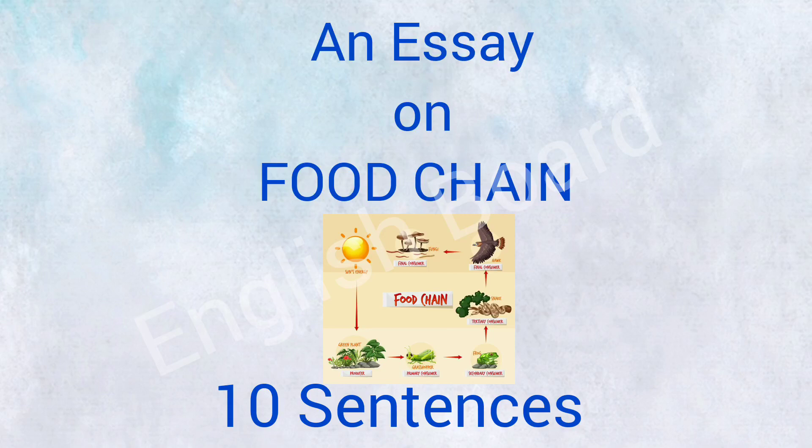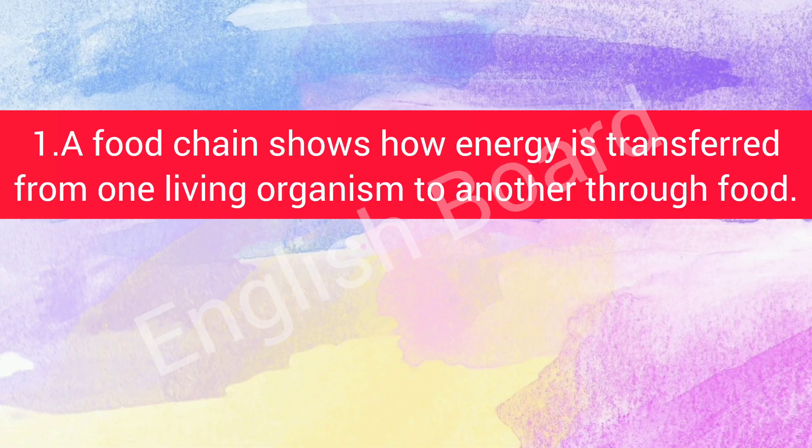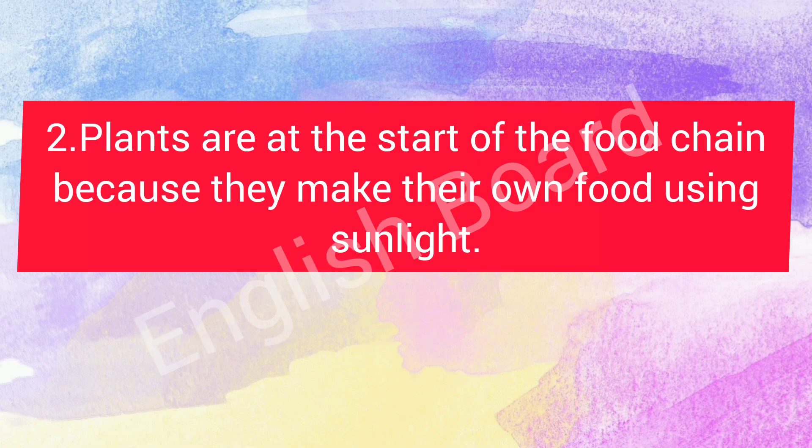An Essay on Food Chain. A food chain shows how energy is transferred from one living organism to another through food. Plants are at the start of the food chain because they make their own food using sunlight.